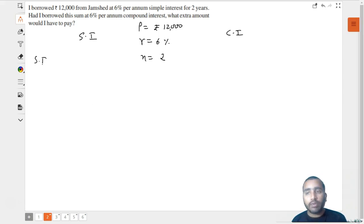Simple interest has a very simple formula: SI = P × R × n / 100. We can write the values.